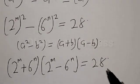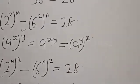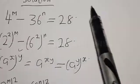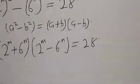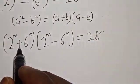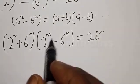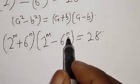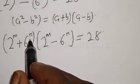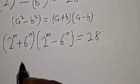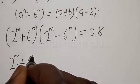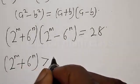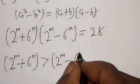Now here we are going to perform a trick such that the equation will be easier to work with. Remember, what we are asked to find is the positive integer solution — m and n are positive integers. Notice that 2 raised to power m plus 6 raised to power n is greater than 2 raised to power m minus 6 raised to power n.